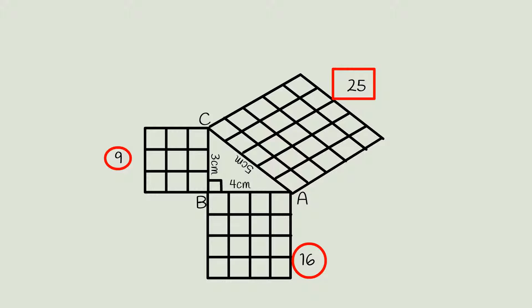If we repeat this step for a triangle with sides 5 cm, 12 cm, and 13 cm, we get a similar result. Addition of 25 and 144 is 169.